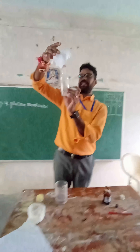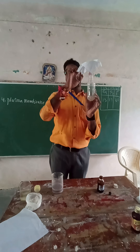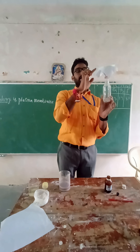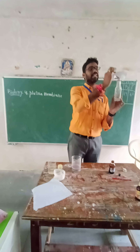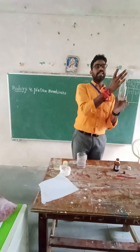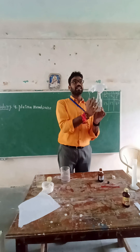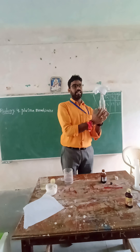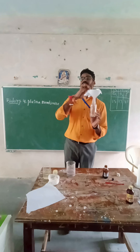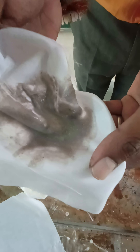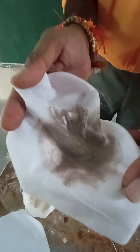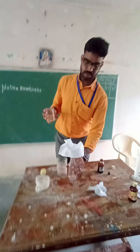In this activity, the cotton cloth acts as the plasma membrane. We observe that it does not allow the flour particles to pass into the bottle. The flour is a solute, and it is not allowed by the plasma membrane to pass through.